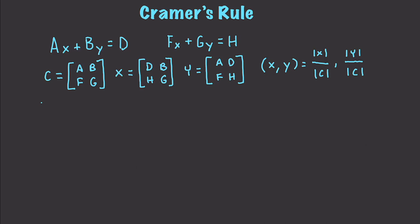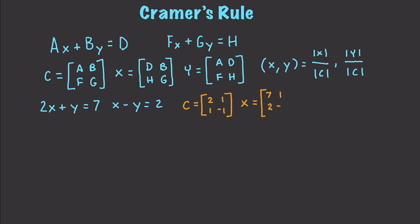So let's say we have the equation 2X plus Y is equal to 7, and another one: X minus Y is equal to 2, and we want to solve those. We can find matrix C: 2, 1, 1, negative 1. The X matrix is 7, 2, 1, and negative 1. The Y matrix is 2, 7, 1, and 2.